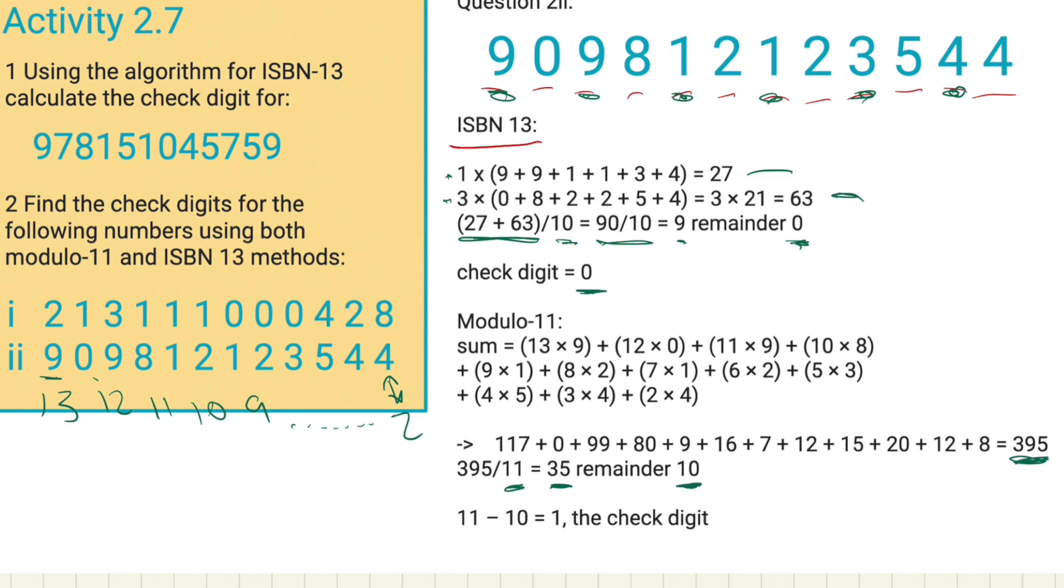We take from the modulo-11, we take the 11, and we take the remainder from it, the 10, and we end up with a check digit here of 1. So, as I said before, it doesn't always work in terms of them corresponding. ISBN-13 for these digits, we ended up with 0, and for modulo-11, we ended up with a check digit of 1.